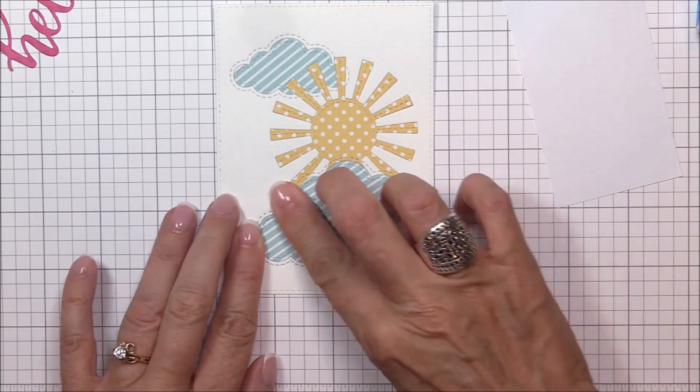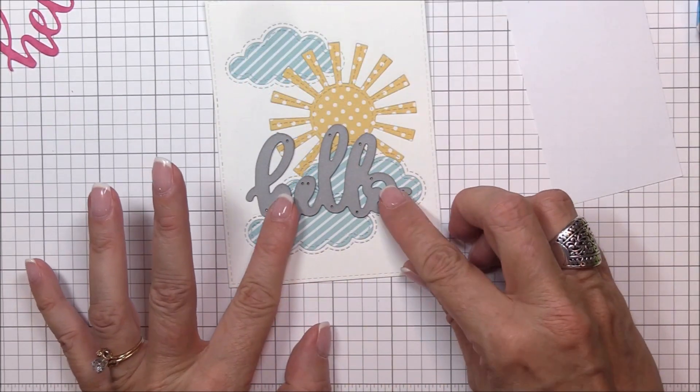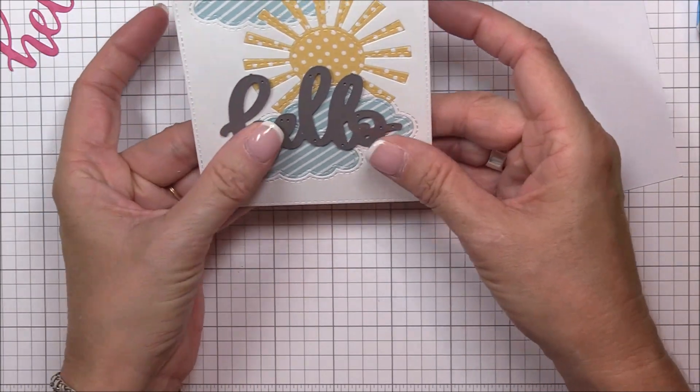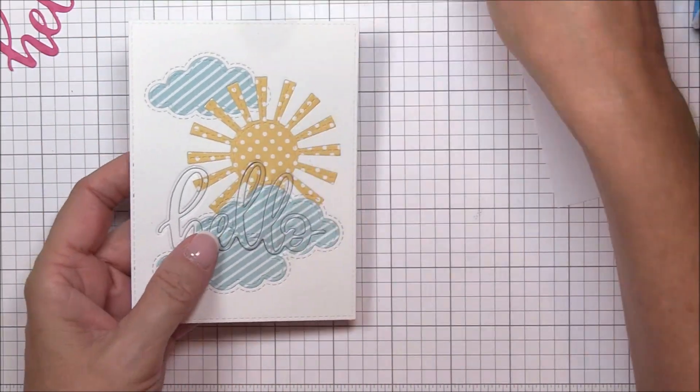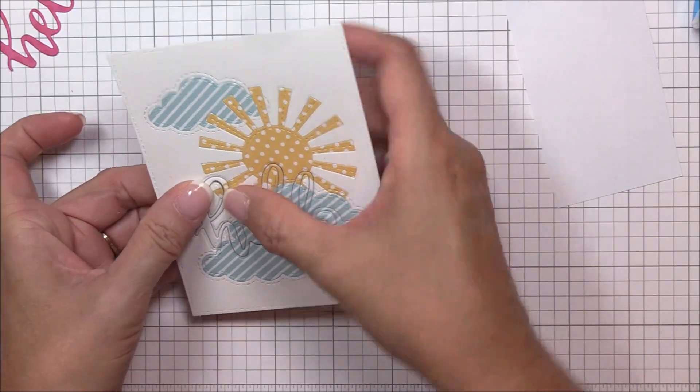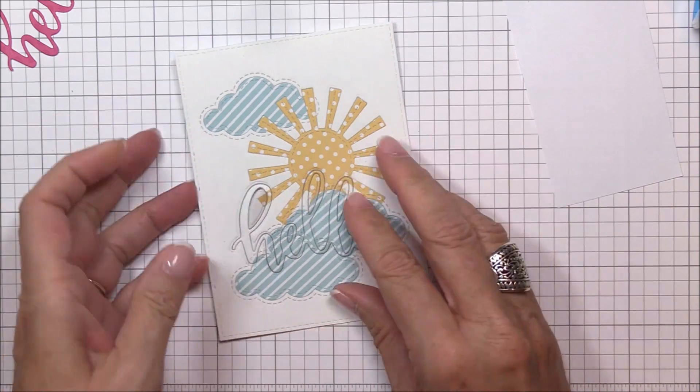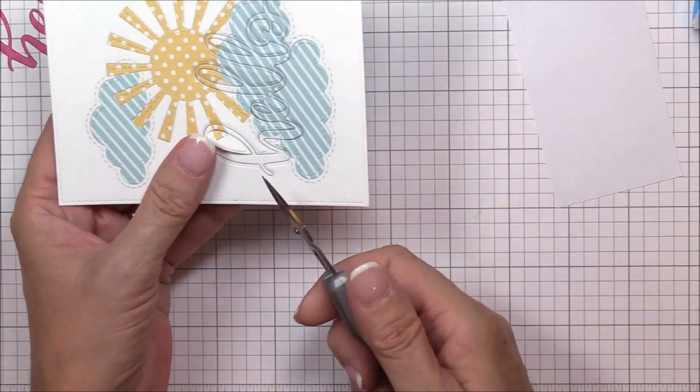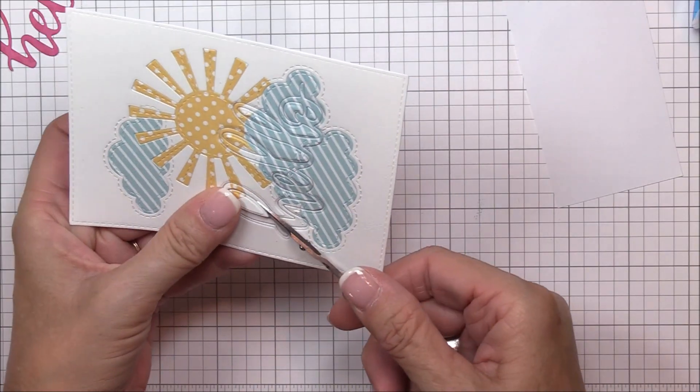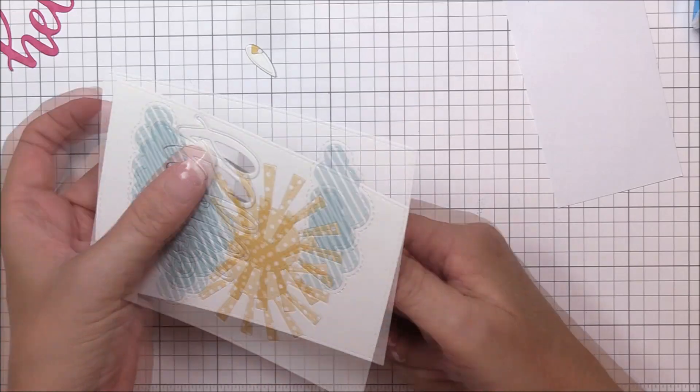I can now add that third cloud die cut in place, and here's where I want to die cut the word for my sentiment. I'm using the new Little Hello Die-namics to cut the word hello from both of the bottom clouds. Again, I'm die cutting through several layers of printer paper, so I'll need to use my detail scissors to cut the negative die cut away from the image panel. It's a little tedious, but it's important to keep that hello negative die cut intact because we'll need the inside parts of the word to fill in later.